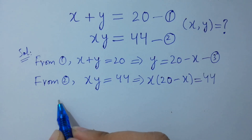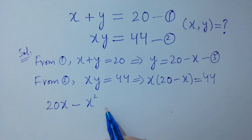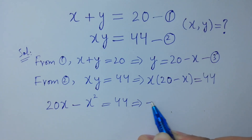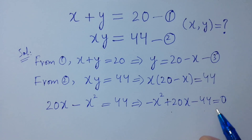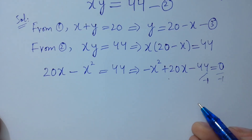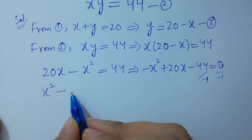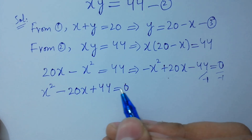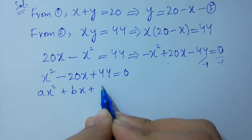x times 20 is 20x, minus x times x gives x squared, equal to 44. So we have minus x squared plus 20x minus 44 equal to 0. Dividing both sides by minus, we get x squared minus 20x plus 44 equal to 0, which is a quadratic equation of the form ax squared plus bx plus c equal to 0.